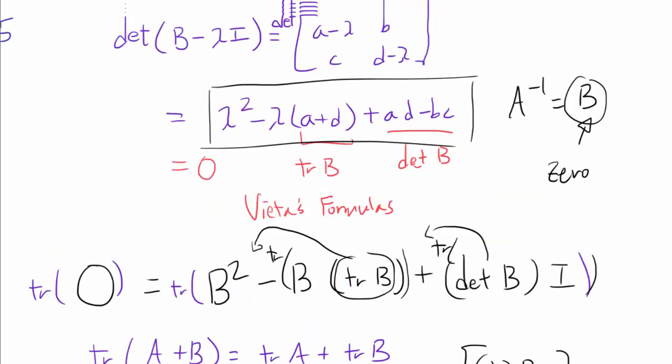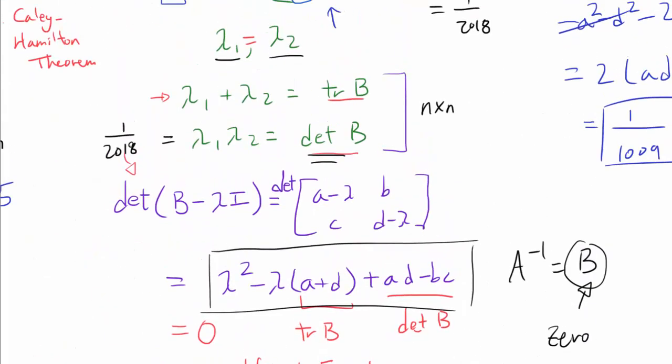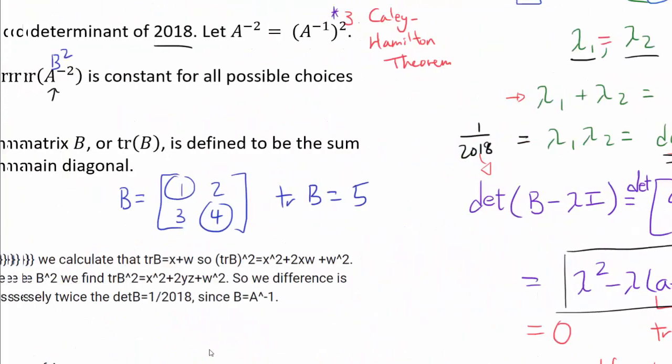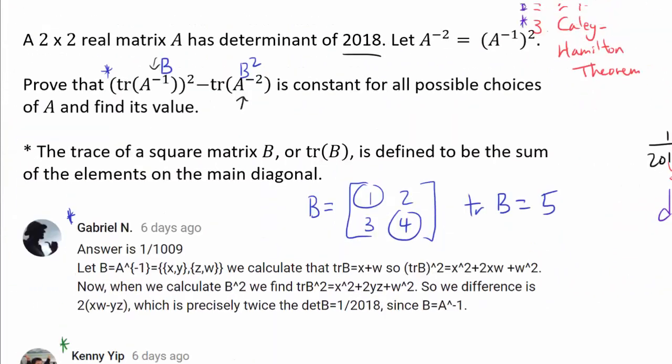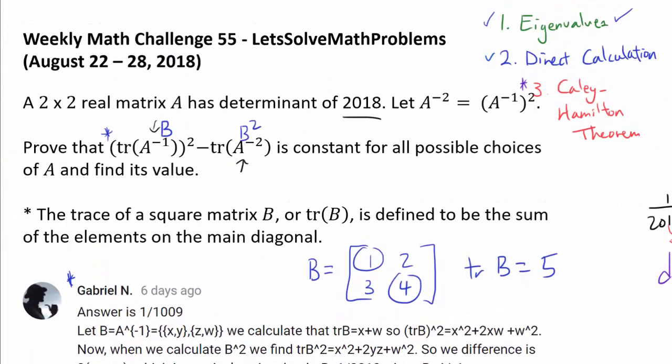So we are done. The answer to this linear algebra question is 1 over 1009.